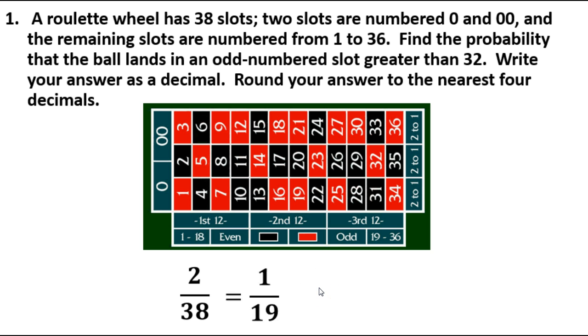If we plug that into our calculator, we can get the answer on that. The biggest thing is that we want to remember to round this one to the nearest 4 decimals. If we round it to the nearest 4 decimals, that's what we'll have, 0.0526.